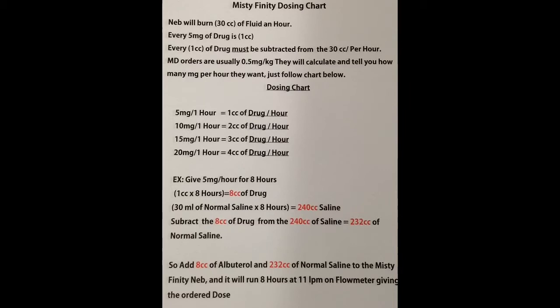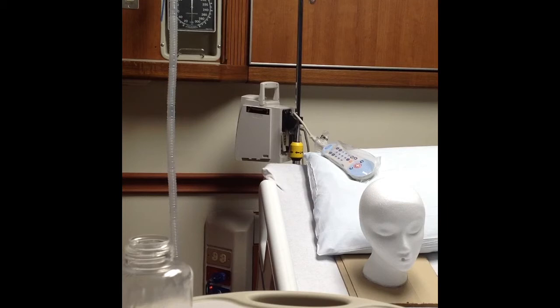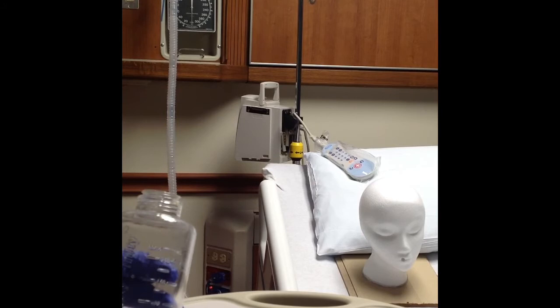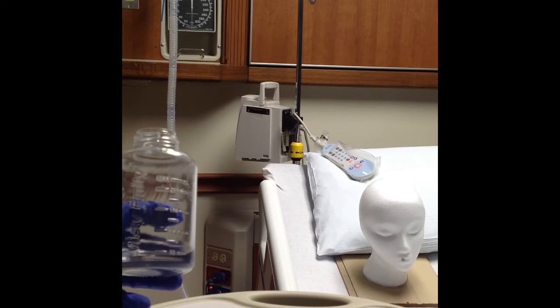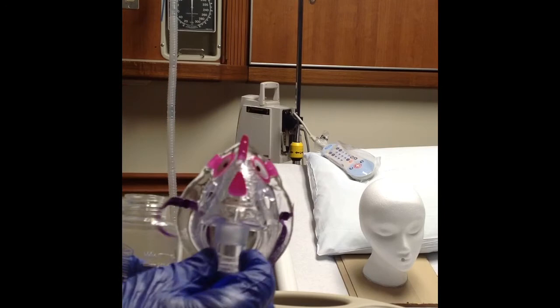Now I'm going to demonstrate how to set the patient up on this continuous neb. The Mistyfinity comes packed with a large bore tubing, the canister for the drug and the saline, and it also comes with this large mask that's kind of similar to our adult mask. I like to use that one.